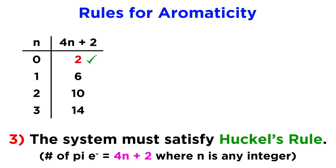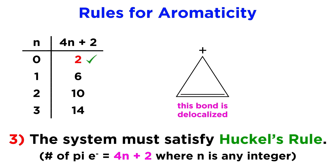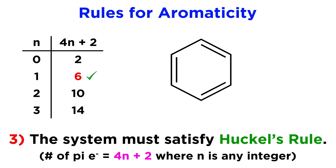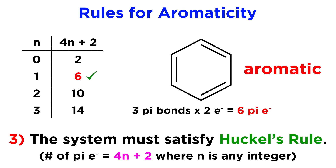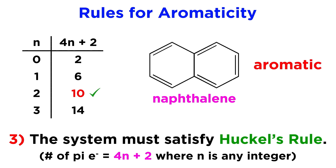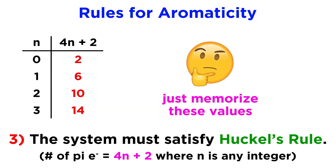So a system with two delocalized pi electrons is aromatic — that would be like this three-membered ring with one pi bond and a cation. The pi bond contains two pi electrons, and we can push this pi bond around the ring by resonance, so this is aromatic. A system with 6 delocalized pi electrons is aromatic — that would be like benzene, with its three pi bonds, each with two electrons. A system with 10 delocalized pi electrons is aromatic — that would be like naphthalene, with five pi bonds delocalized around this polycyclic structure. So in the end, we can just memorize 2, 6, 10, and going up by 4s from there.